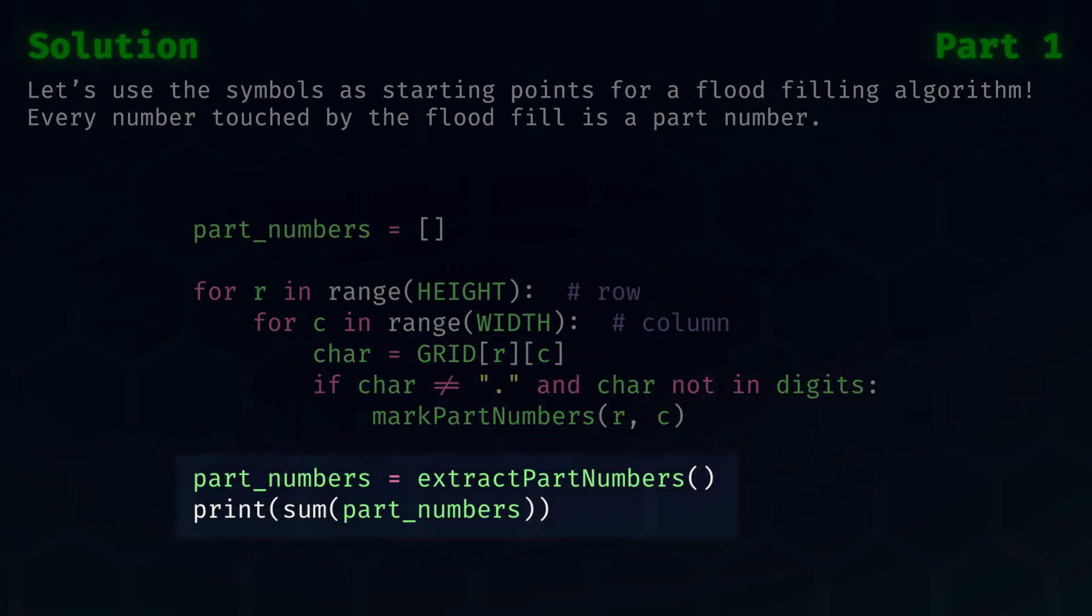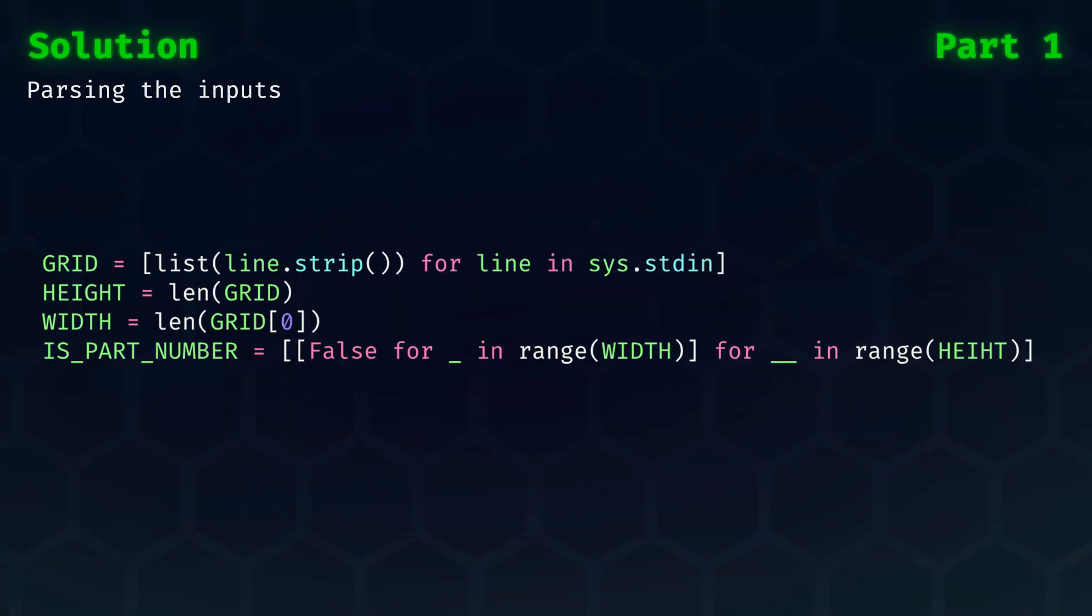After marking all numbers in the grid, we shall call a function to extract the part numbers and we can print the sum. Working with 2D grids works easiest for me if I convert the strings from our input to actual lists of characters. Then for convenience, let's store the width and height in global variables as well. Lastly, is part number is a 2D array of the same size as the original grid, simply marking if a cell is a part of one of the part numbers. This will help us doing the flood fill.